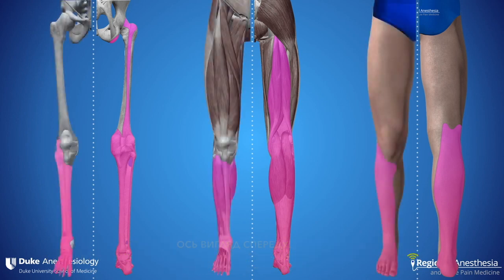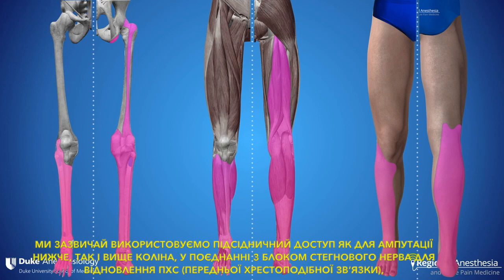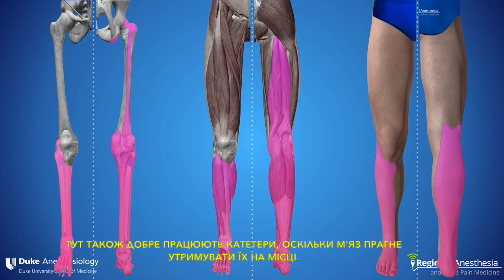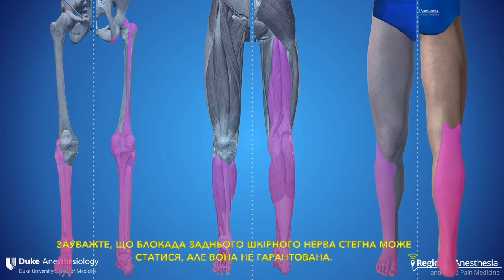Here's the anterior side. We use the subgluteal commonly for both below and above knee amputations, in combination with a femoral block for ACL repair, and frequently for ortho trauma cases where we want to stay out of the way of the surgical site near the proximal tibia. Catheters work well here too, as the muscle tends to hold them in place. Note that a block of the posterior cutaneous nerve of the thigh can occur, but it's not guaranteed.